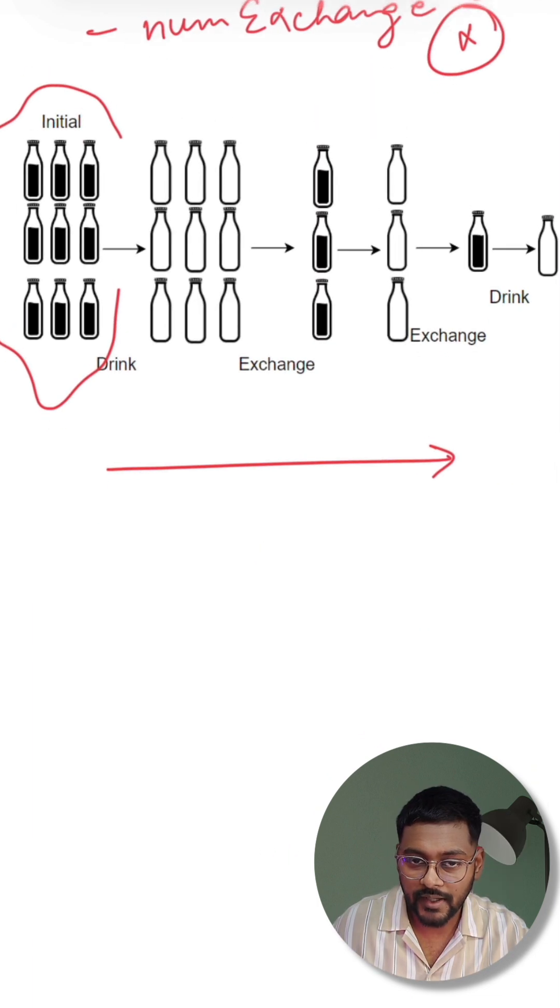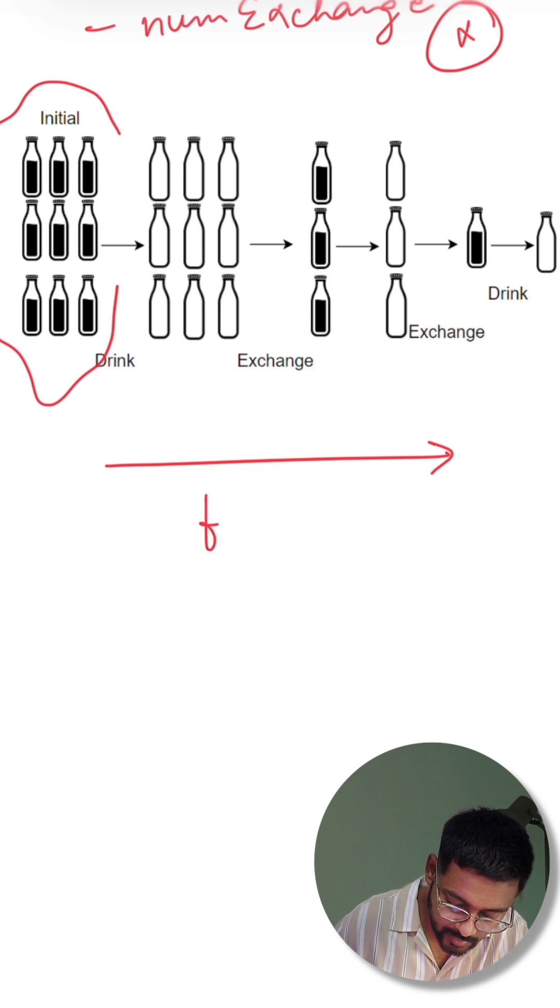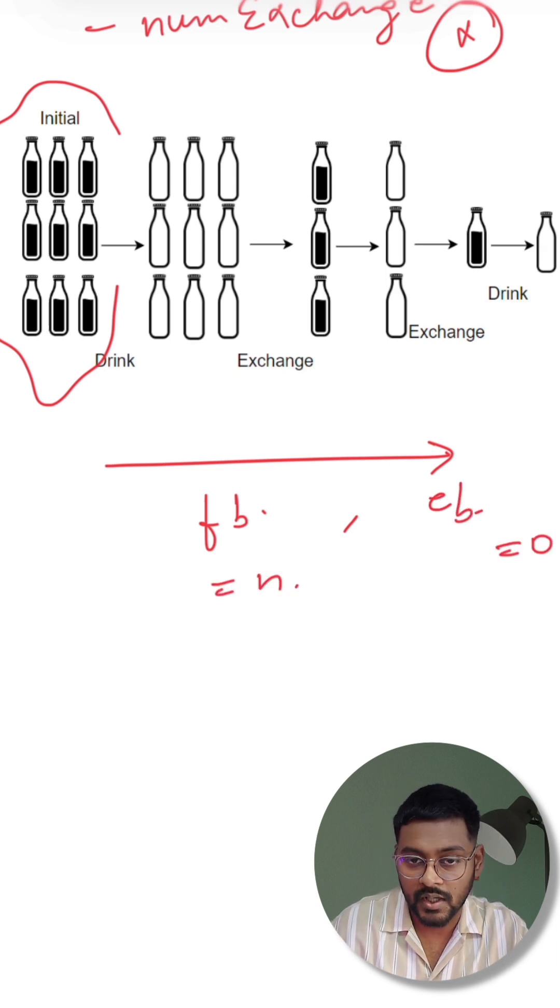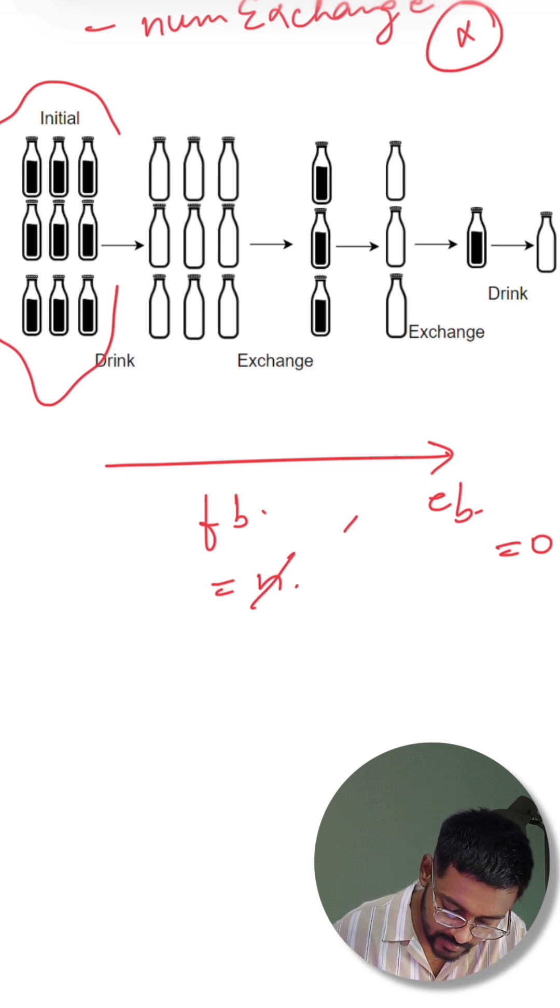So how can we tackle it? Initially let's say we have number of filled bottles FB and we have number of empty bottles as EB. Firstly, I will be able to drink every single bottle and those N bottles will become empty. So these N bottles I will be able to drink and they will become empty bottles. And along with that my answer will be updated to plus equal to N.